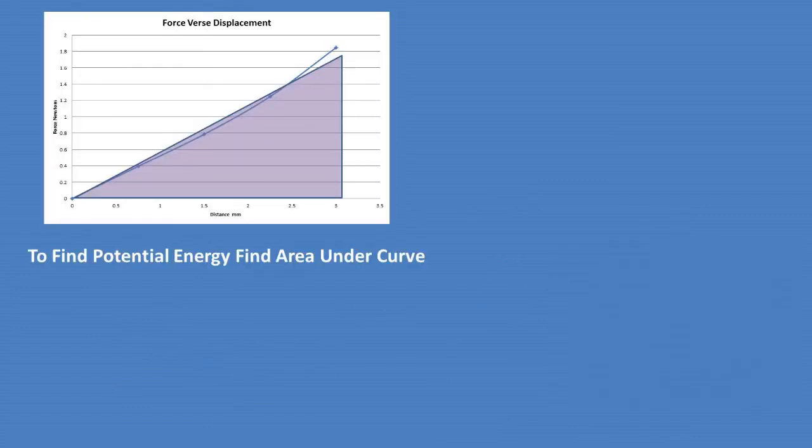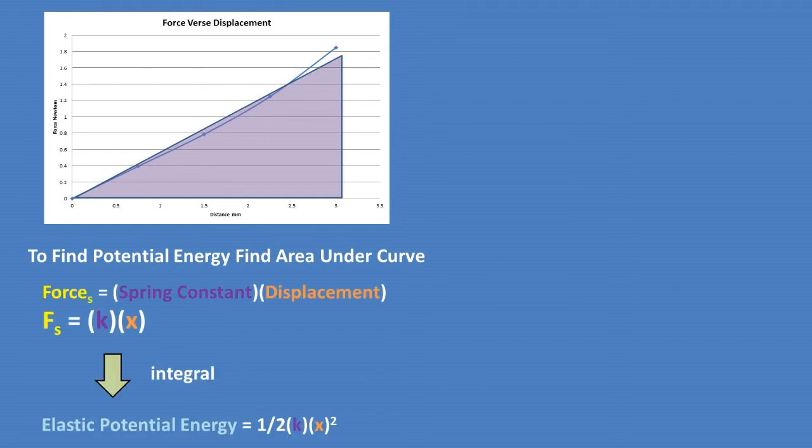So now, let's go over how to find the potential energy stored in the spring after being compressed 3 millimeters. To do so, we must find the area under the curve. We can do this in one of two ways. The first is using calculus to integrate the force times displacement formula, or Hooke's law equation.